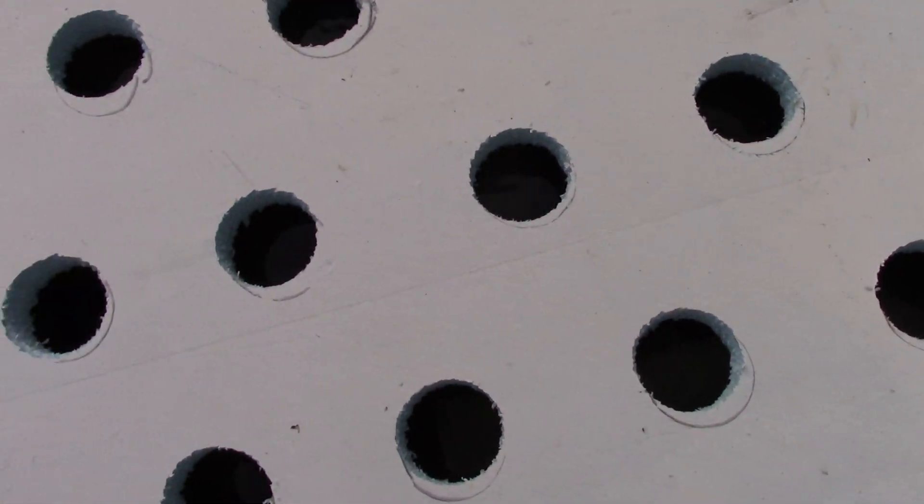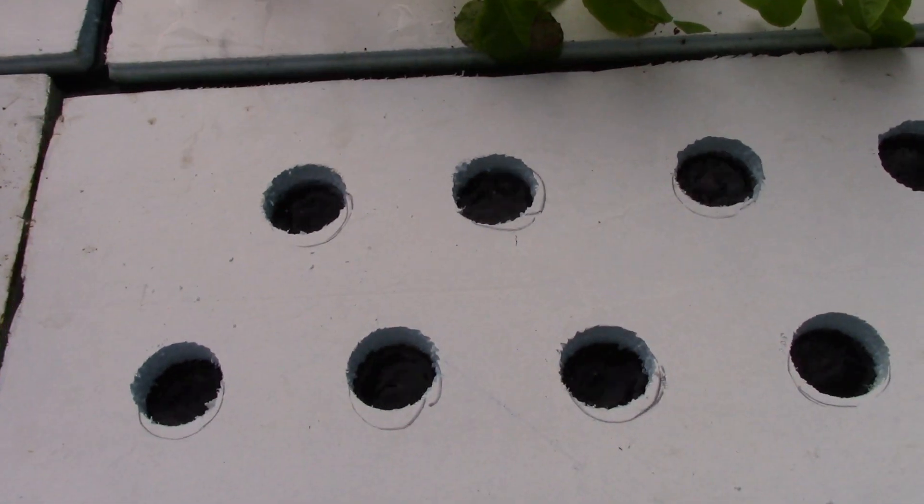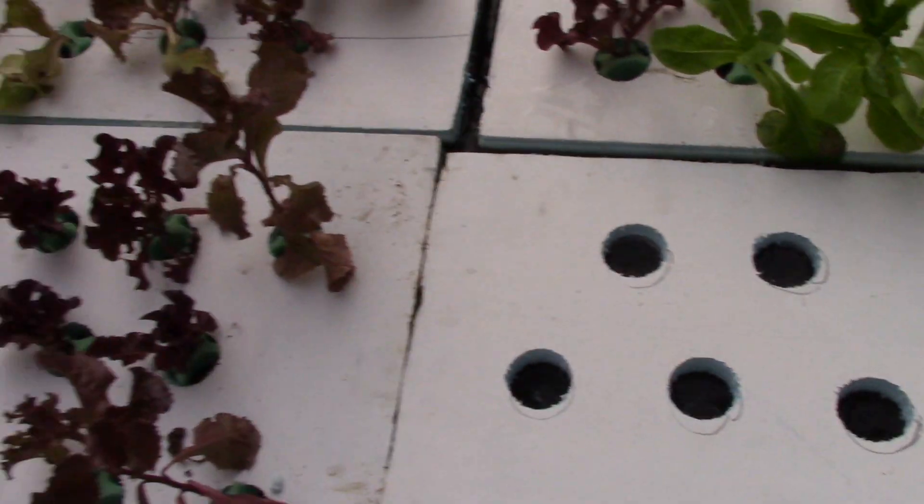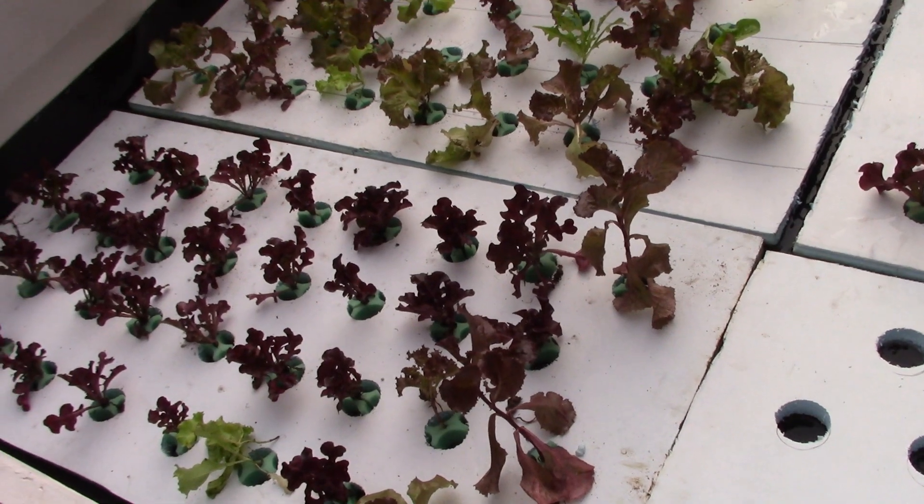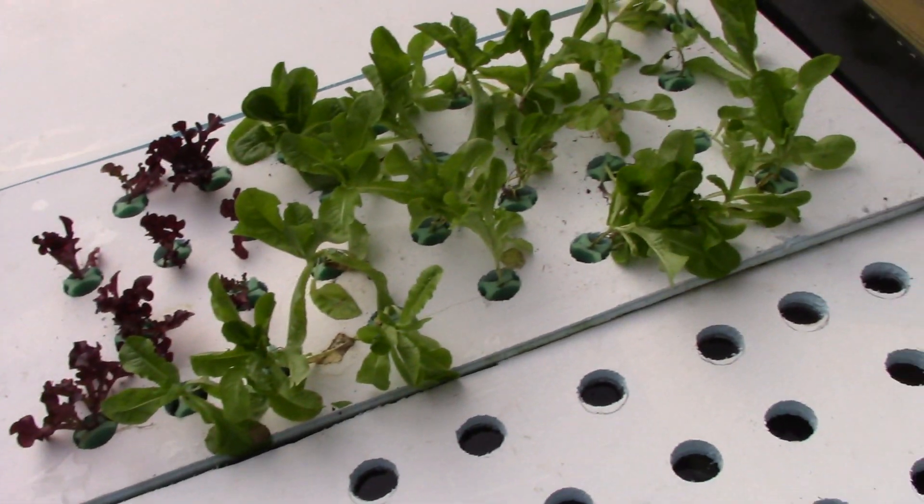As you can see, I've got some lettuces in here. These are lettuces that I bought and had to wash the roots. That's why this is a little dirty on here. I wanted to get some that was mature to start the system out.